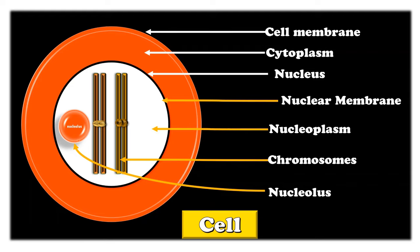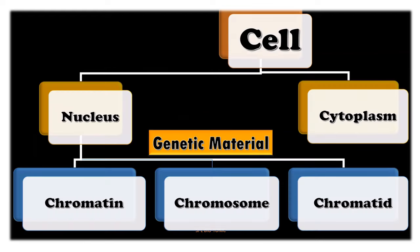In nutshell, the cell consists of two parts: nucleus and cytoplasm. The genetic material in the nucleus shows different forms such as chromatin, chromosome and chromatids.